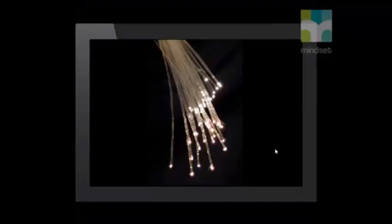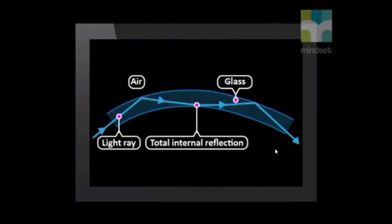Now let's see how total internal reflection could be useful to us. Optical fibers are very thin fibers of glass or plastic, about 0.1 mm in diameter. These optical fibers can be used to transmit light using total internal reflection.